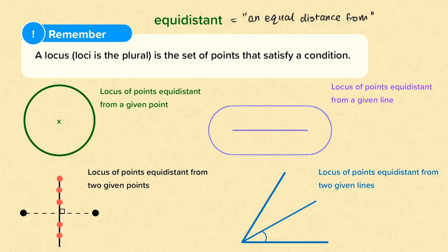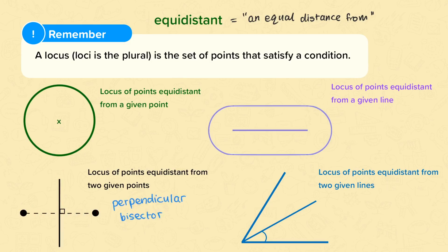And if I were to connect my two points, I would see that this line would meet the locus at a right angle. So if I actually wanted to draw this, what I would need is a perpendicular bisector of this line here.